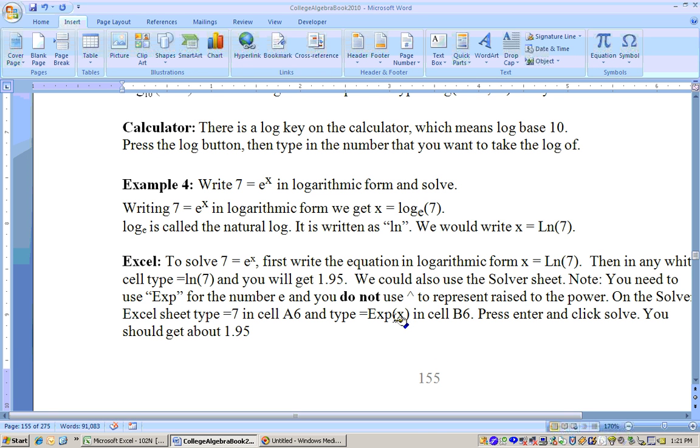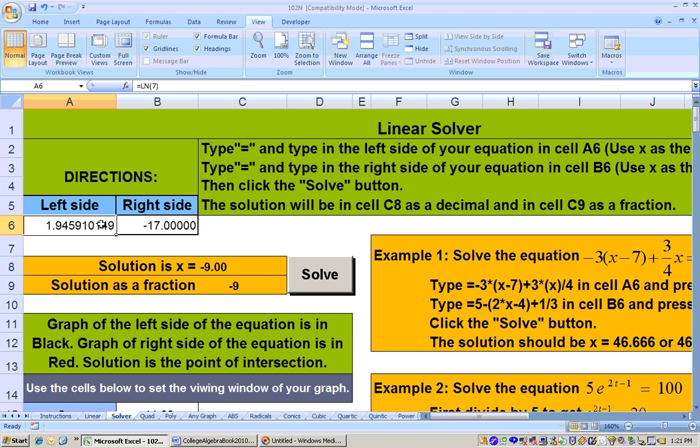You might be wondering, how do you get e on Excel? You can get the number e by doing equals exp parentheses 1. That will get you e to the first power. If you need to take e and raise it to a power, then you do not use the caret up. If you want to know what e is to the fifth power, you just do exp parentheses 5. That's going to get you e to the fifth. No caret up.